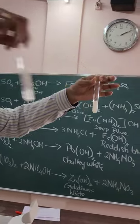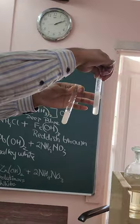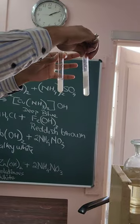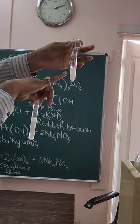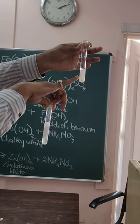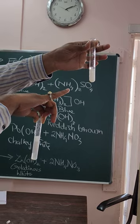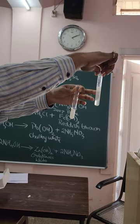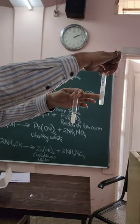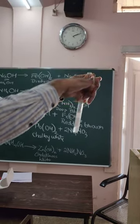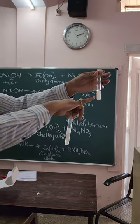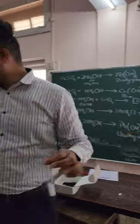This is lead hydroxide — the PPT which is chalky white. You can see that it is opaque. And this is zinc hydroxide — the PPT which is a little transparent. It is gelatinous. And this one is very opaque. So, this is chalky white and this is gelatinous white.